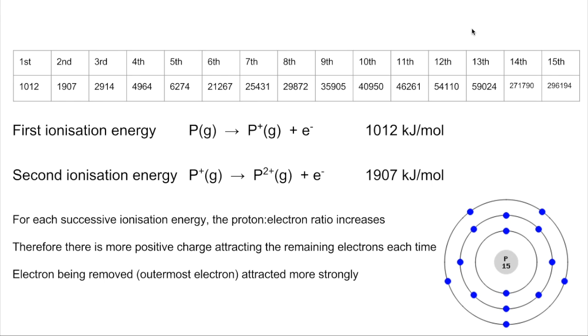So all I've done is tabulated the 15 ionization energies for phosphorus. We'll just look at the first two and hopefully we'll be able to explain the increase in the ionization energies from these two.